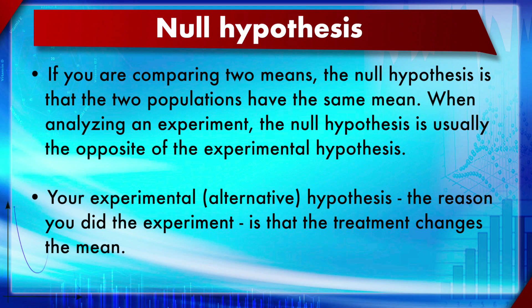If comparing two means, the null hypothesis is that mean 1 equals mean 2, or mean 1 minus mean 2 equals zero. When analyzing an experiment, the null hypothesis is usually the opposite of the experimental hypothesis. The experimental hypothesis — also known as the alternative hypothesis — is the reason you conduct the experiment.